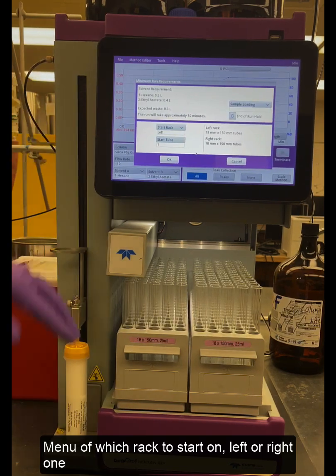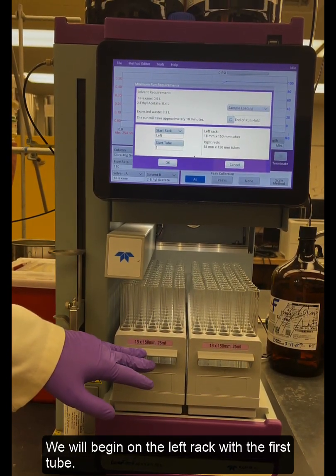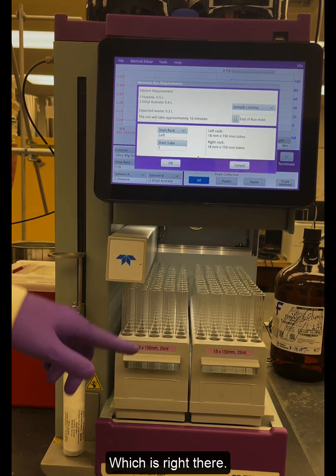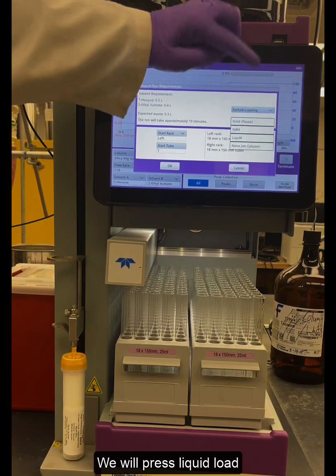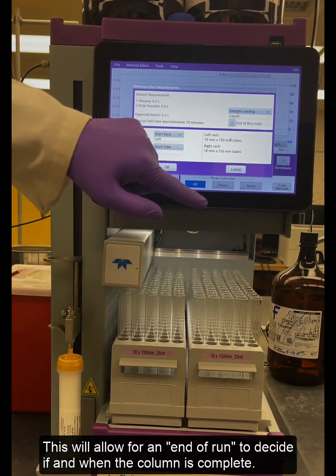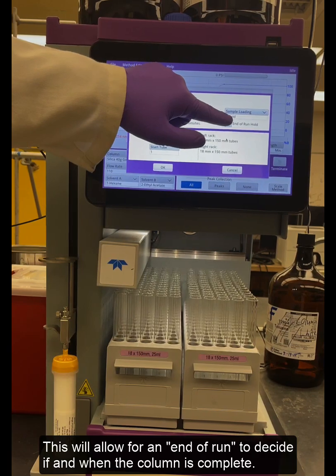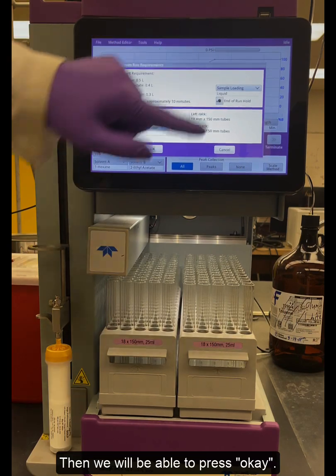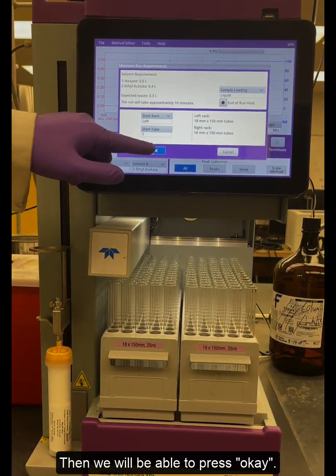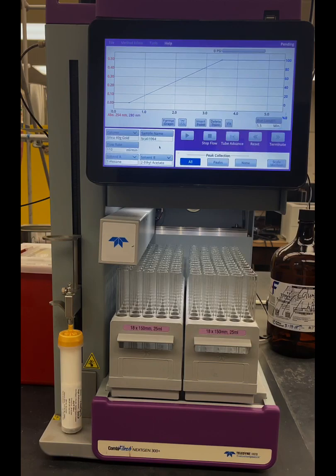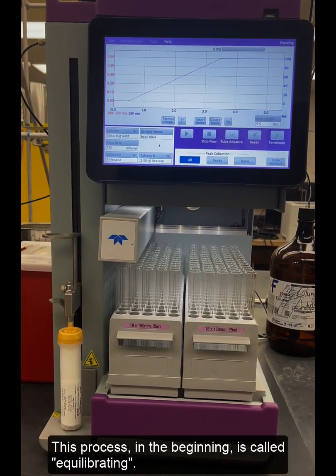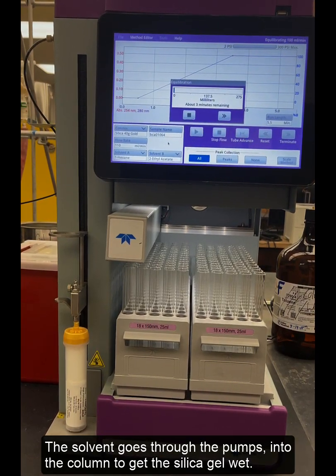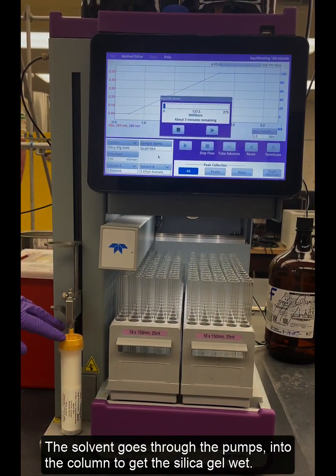Choose which rack to start. We have the left and the right one. We will begin on the left rack on the first tube which is right there. The sample we will press liquid load and allow for an end of run hold to decide if and when the column is complete, and then we will be able to press OK. The process is beginning which is called equilibrating, where the solvent goes through the pumps into the column to get the silica gel wet.